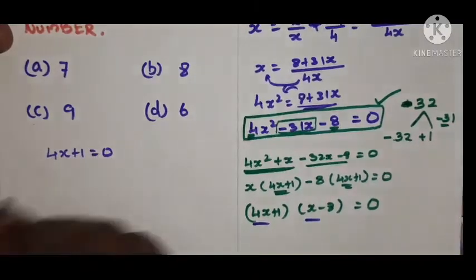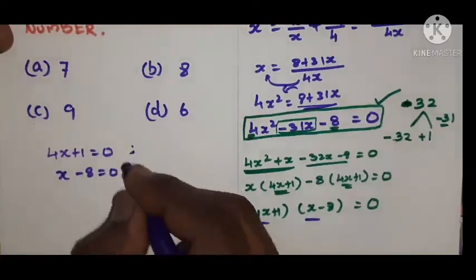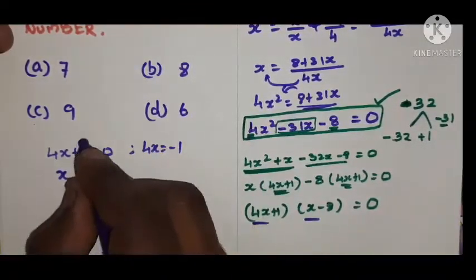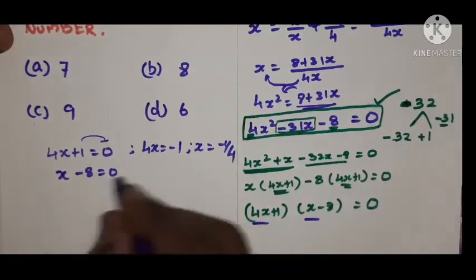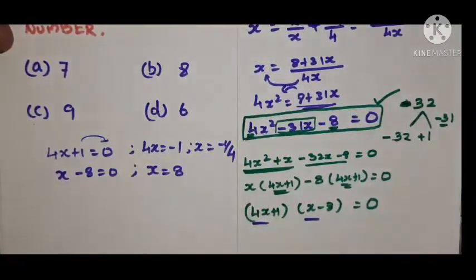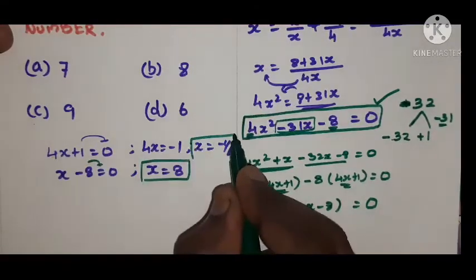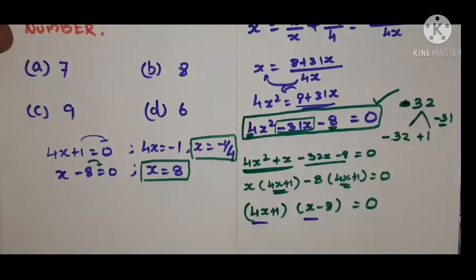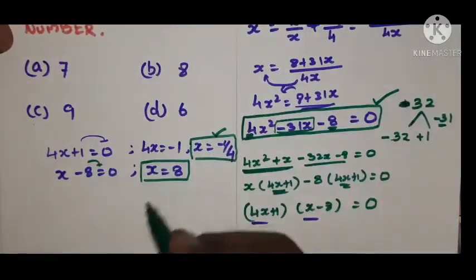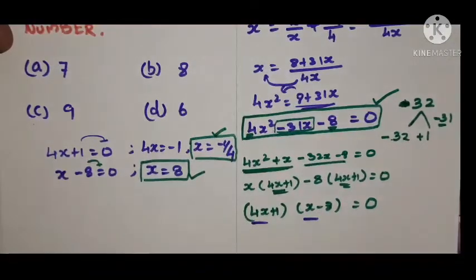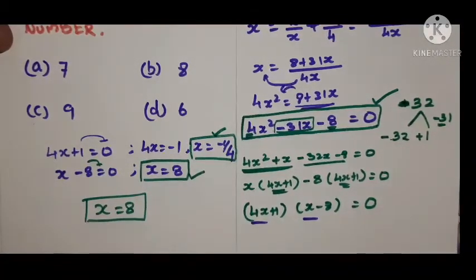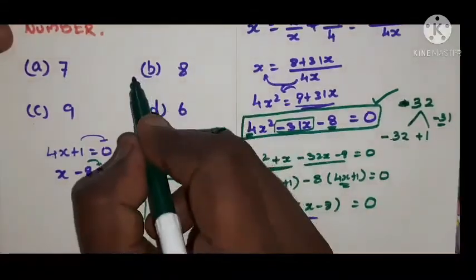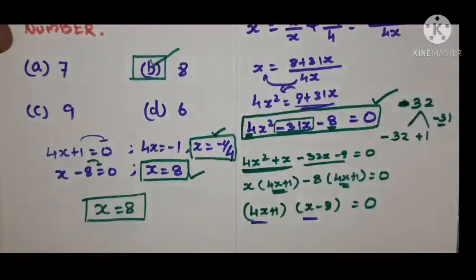From the two factors: 4x + 1 = 0 gives 4x = −1, so x = −1/4. And x − 8 = 0 gives x = +8. So x is either +8 or −1/4. Since the particular number cannot be negative, we pick the positive value: x = 8.